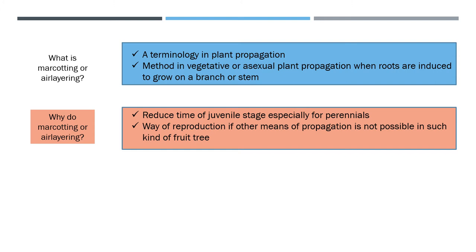To remedy these undesirable characteristics, you may need to clone by marcot cutting or air layering — cloning the exact characteristics of that particular fruit tree you want. The main reason is to reduce time: you do marcot cutting or air layering to reduce the juvenile stage, especially for perennials like fruit trees. Just as humans have a teenage stage, fruit trees have a juvenile stage — by marcotting, you reduce this so they will flower as soon as possible. It is also one way of reproducing a particular species if other means of propagation are not possible.